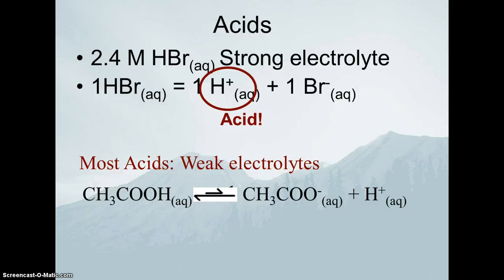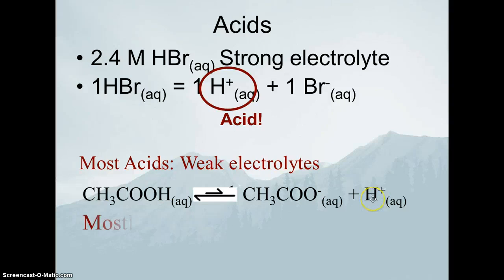Here is acetic acid, which you know as vinegar. Acetic acid is a weak acid, which means only some of it dissociates into hydrogen ion and acetate ion. We use a double-headed arrow to indicate that. We spend most of our time on the reactant side and only a little on the product side. A weak electrolyte partially dissociates in water — at any given point, about 90% of acetic acid molecules are still intact (dissolved but not dissociated), and the other 10% have fallen apart.